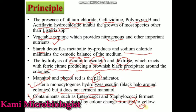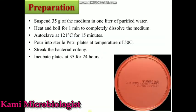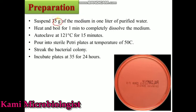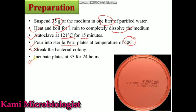Now how we can prepare this media: we need 35 grams of PALCAM Listeria Agar and dissolve it into one liter. Then we will heat and boil it for one minute to completely dissolve the media. Then we will autoclave it at 121 degrees Celsius for 15 minutes. After that, we will pour this media into sterilized Petri plates at 50 degrees Celsius, then streak the bacterial colony using an aseptic technique.